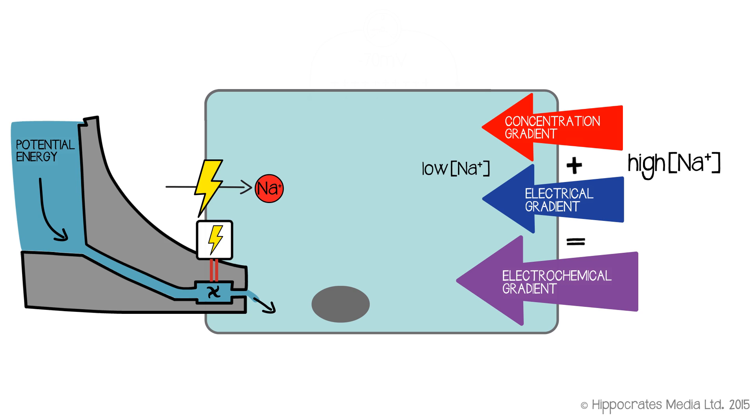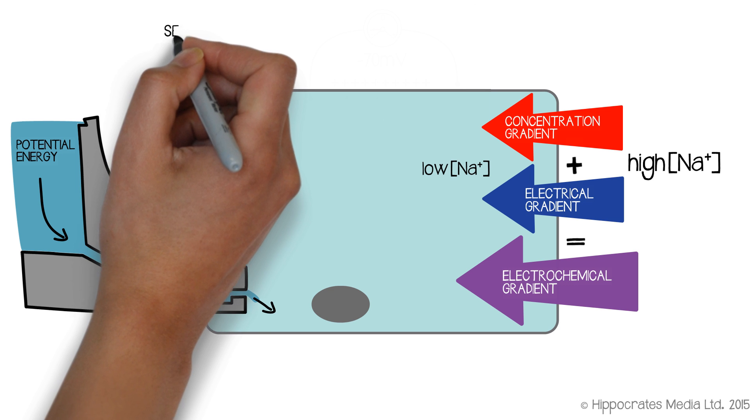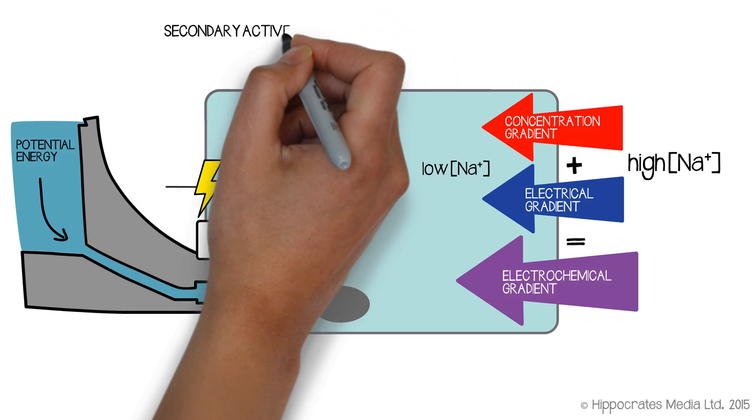Now, we're not using it in a real cell to generate electricity like a hydroelectric dam does, but the free energy that's released if you allow sodium into the cell can be used to do other useful biological processes. The most universal process that can be powered in this way is called secondary active transport.